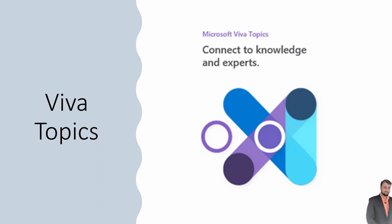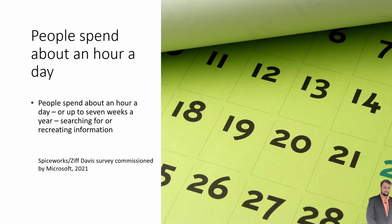The first Viva product is Viva Topics, which comes up with connecting knowledge and experts. There are two different entities: one is knowledge and one is the person who is working with this knowledge. Viva Topics brings knowledge and experts together with a single topic card. Most of the time, people spend about an hour a day searching for useful information, and Viva Topics is something which helps us overcome this.